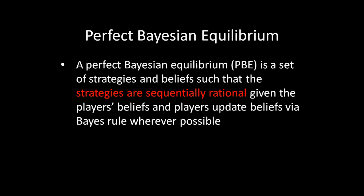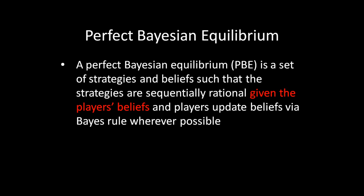There's an important distinction between games of complete information and games with incomplete information when it comes to threat credibility. With complete information, you know your payoffs and your opponent's payoffs, and that affects the credibility of your threat. In a game of incomplete information, you don't know exactly what you're facing — your opponent could be a weak type or a strong type. Maybe you're willing to fight a weak type but not a strong type, so the credibility of your threat depends on what you believe about your opponent. That's why we have sequential rationality given the player's beliefs.